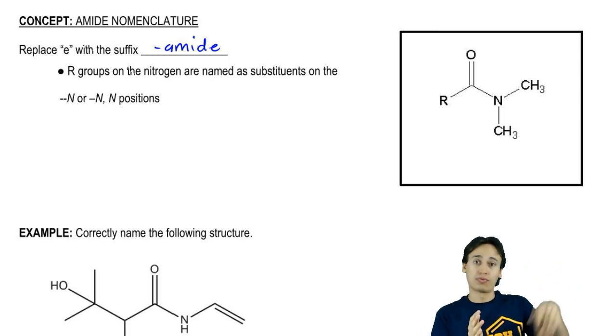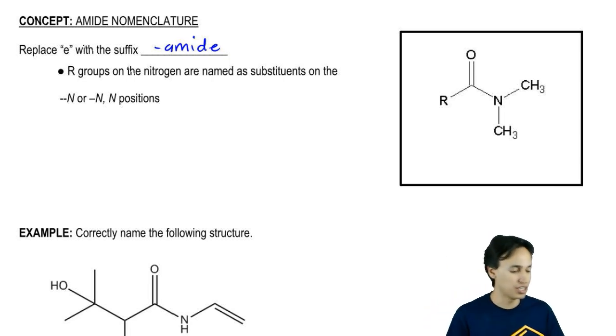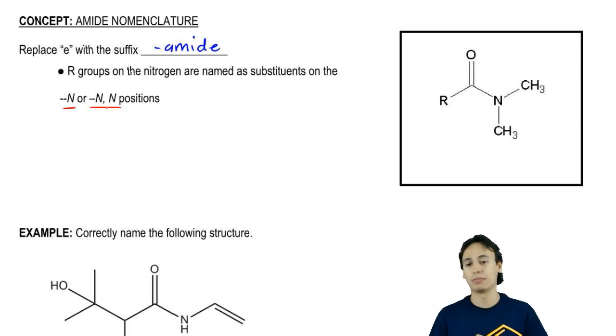For nitrogen compounds, you can form three bonds, so that means we can have up to three things coming off of that nitrogen. You're going to name them as substituents either on the N or N,N positions.